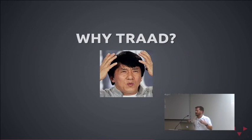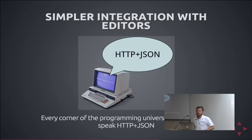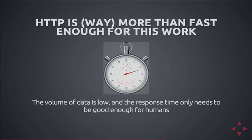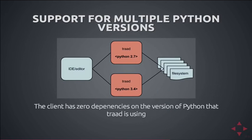Why did I go through the trouble of writing Trod when there are existing tools that wrap Rope for Emacs? First, simpler integration with editors — everything speaks HTTP JSON now, so I didn't have to worry about embedding the Python interpreter in Emacs. HTTP is way more than fast enough; the real time is in the refactorings themselves, not in the transport overhead. Also, this is a great way to support multiple Python versions in one Emacs. If I were embedding the interpreter I'd have to pick one, but as separate processes it's really easy, and Emacs knows very little about the 2-vs-3 distinction. This really simplifies concurrent development across multiple projects.